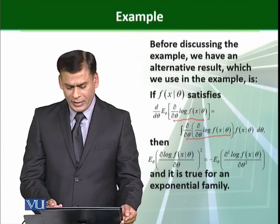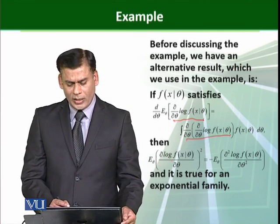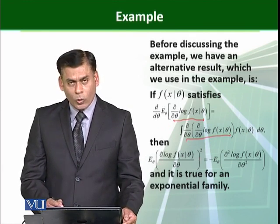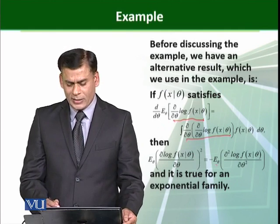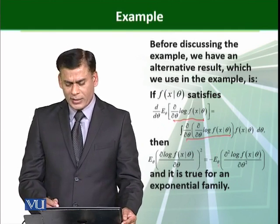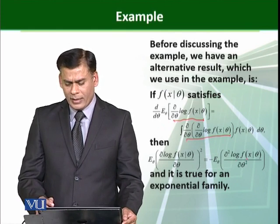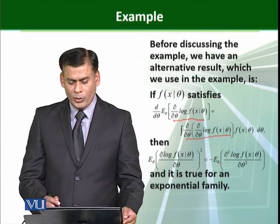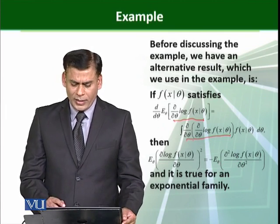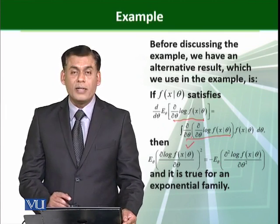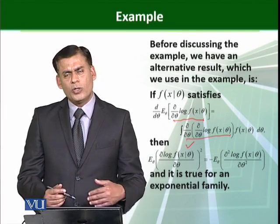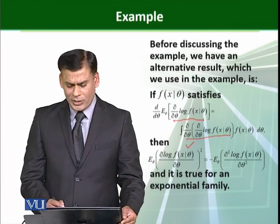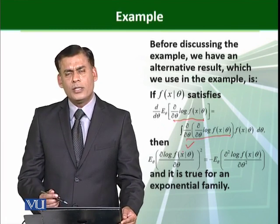When we integrate it, then we find the result: the expected value of the derivative of log f of x theta over theta squared equals minus expected value of the second derivative of log f of x theta over theta squared. In the inequality we proved, this was used in the denominator. If we want to use the second derivative, then in this case the denominator of the inequality will be this.